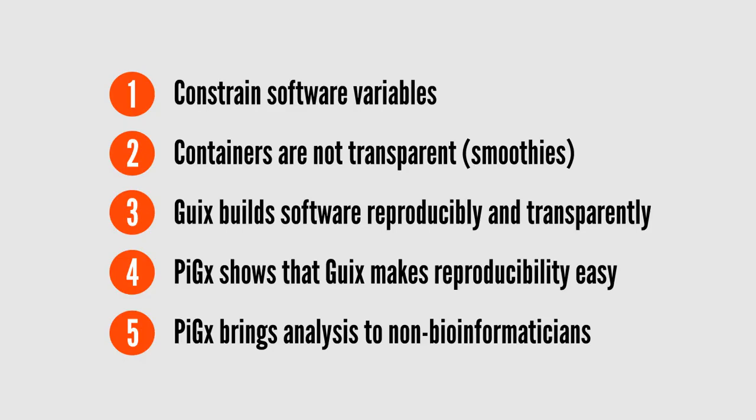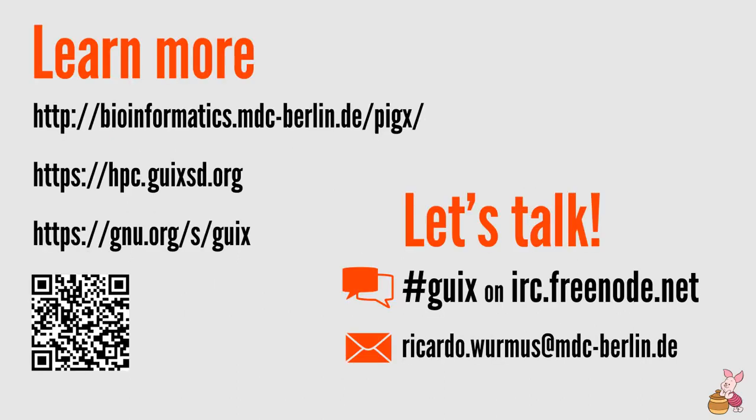Let's recap. When doing science with computers, we must constrain software variables. Containers are not the kind of solution that we want because they're not transparent — think of the smoothie. Guix, however, builds software reproducibly and transparently. Our work on PIGS demonstrates that Guix can make reproducibility easy. The ability to recreate an environment bit for bit does not have to be at odds with usability. And finally, we developed these pipelines to bring analysis of genomics data to people who are not bioinformaticians. We hope that you'll give it a try too.